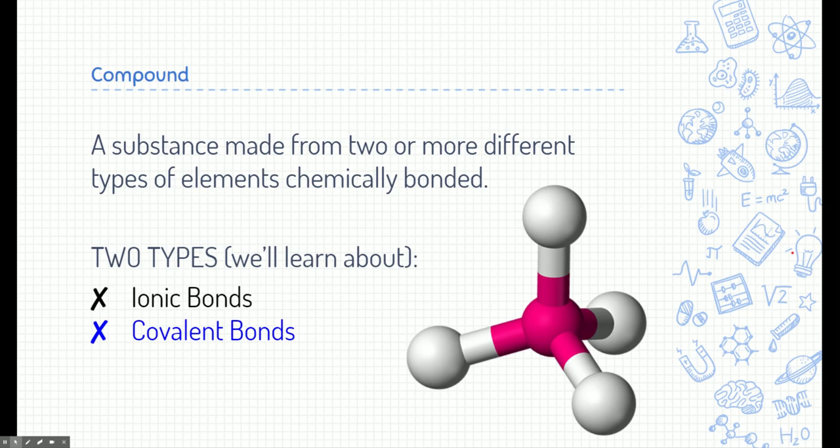First, let's review what a compound is. You might recall that a compound is a substance made of two or more different types of elements that are chemically bonded. Now we've been learning about ionic bonds or ionic compounds for a while. We're going to switch gears now and talk about covalent bonds and how they're different.